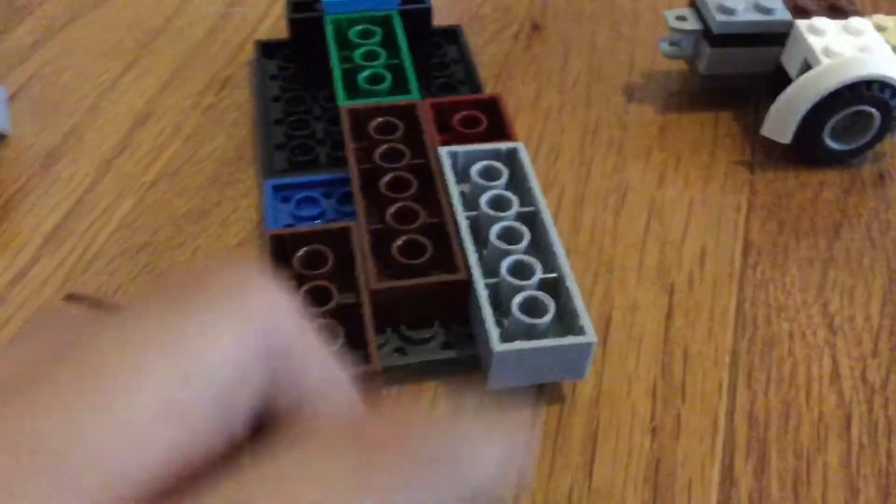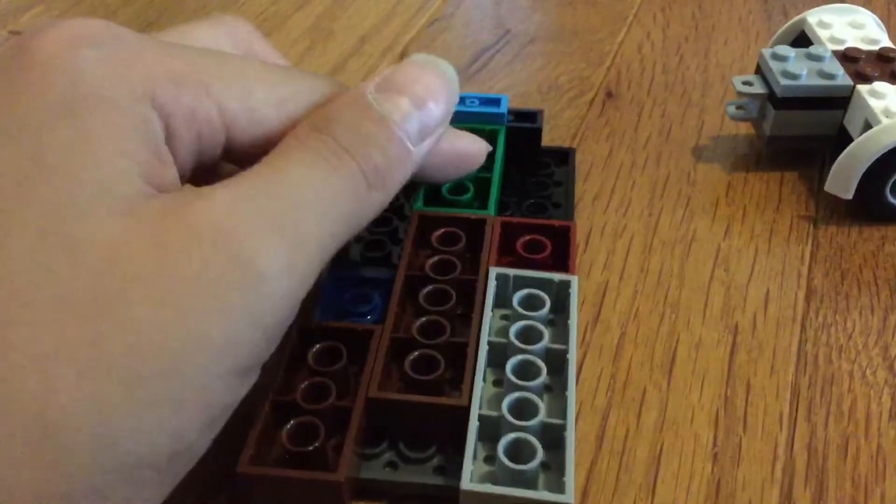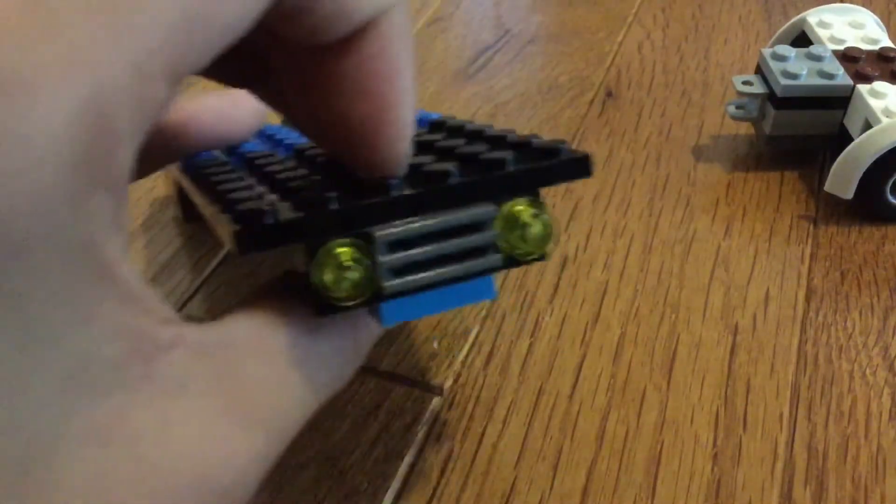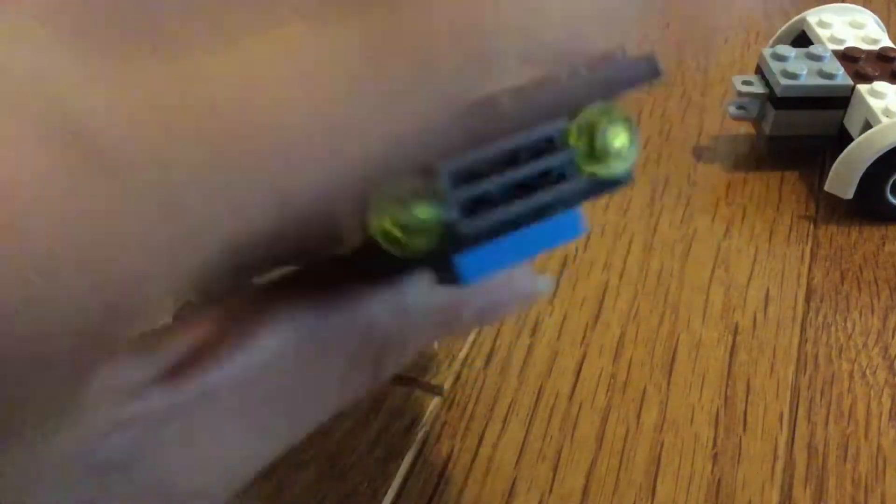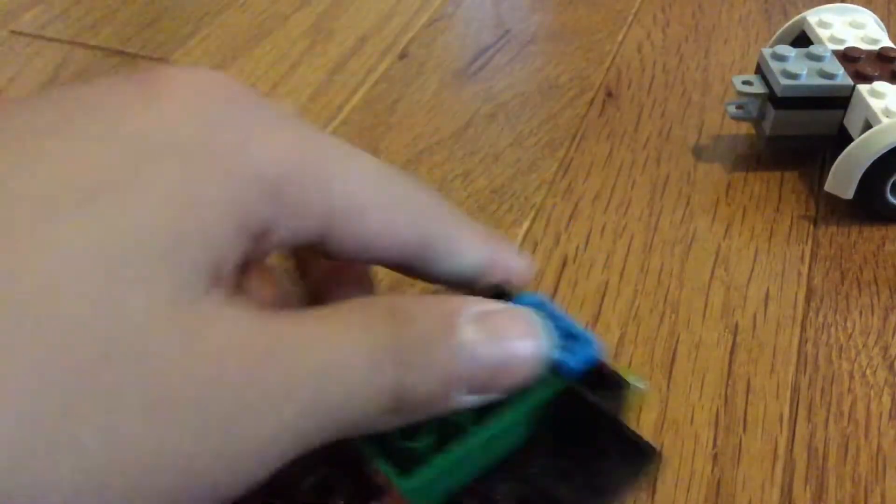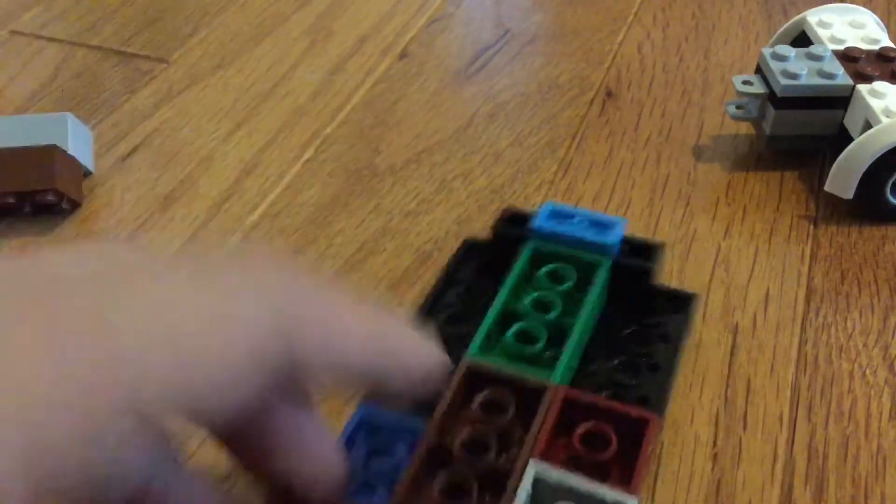And then you put two by four right here, another two by four right here, a one by four SNOT brick. You put grill or whatever design you want, then you put a one by two right here.